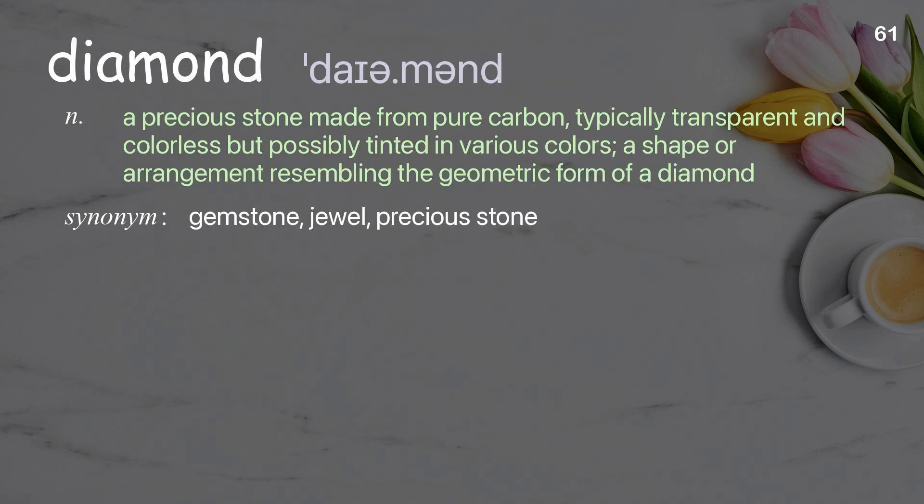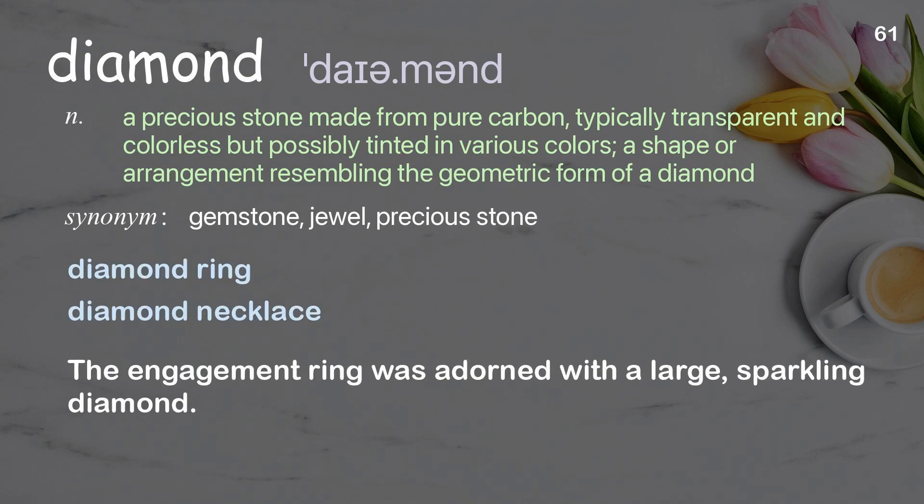Diamond. A precious stone made from pure carbon, typically transparent and colorless, but possibly tinted in various colors; a shape or arrangement resembling the geometric form of a diamond. The engagement ring was adorned with a large, sparkling diamond.